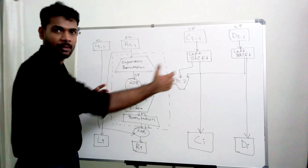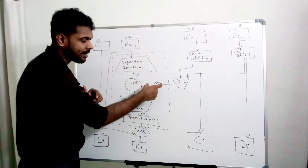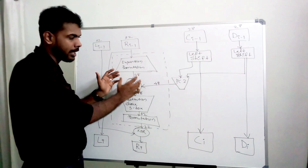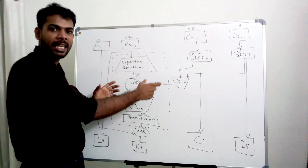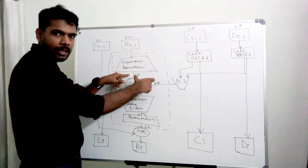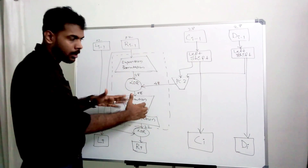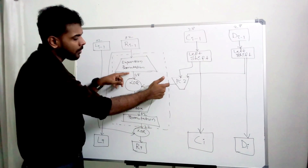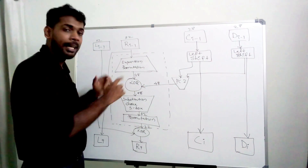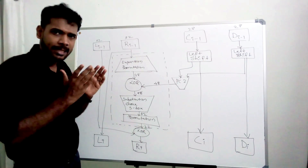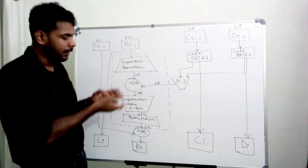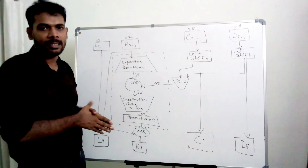When the key is 48 bits, we XOR it with the 48-bit expanded right half. We keep the XOR operation, and the result — also 48 bits — is then passed through the substitution box (S-box).